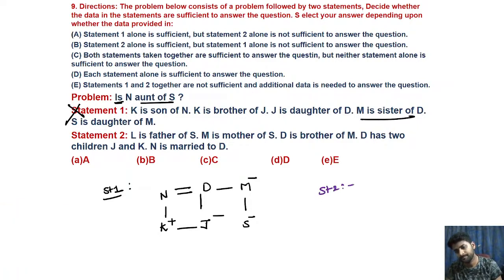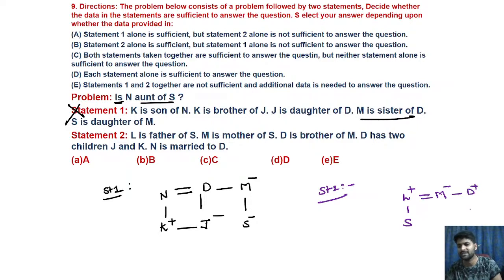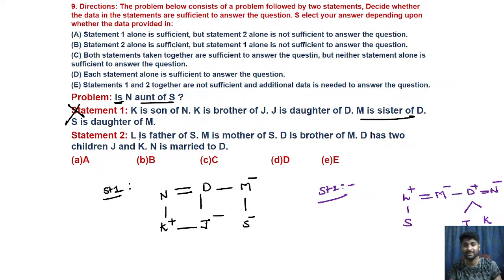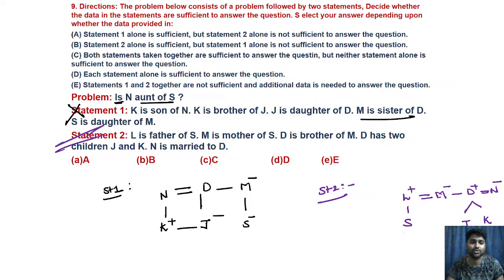Now statement 2: L is the father of S. M is the mother of S, so L and M are a couple. D is the brother of M. D has two children J and K. N is married to D. Since D is male, N married to D means N is female. M is the mother of S, M has a brother D, and D is married to N. Therefore N is the aunt of S. Statement 2 alone is sufficient — choose that option.